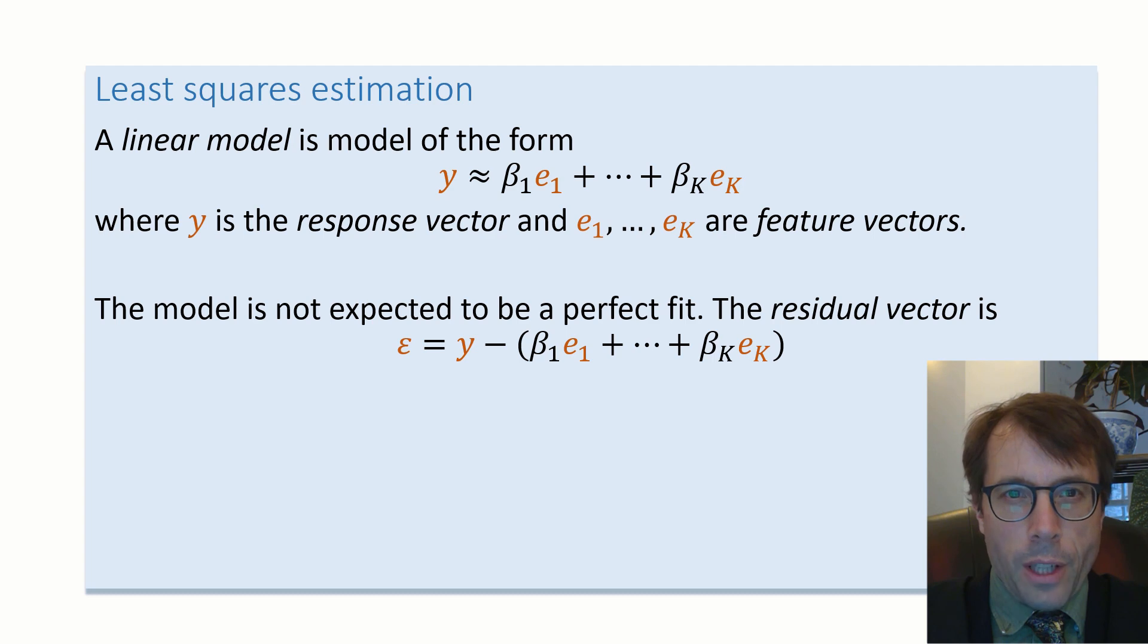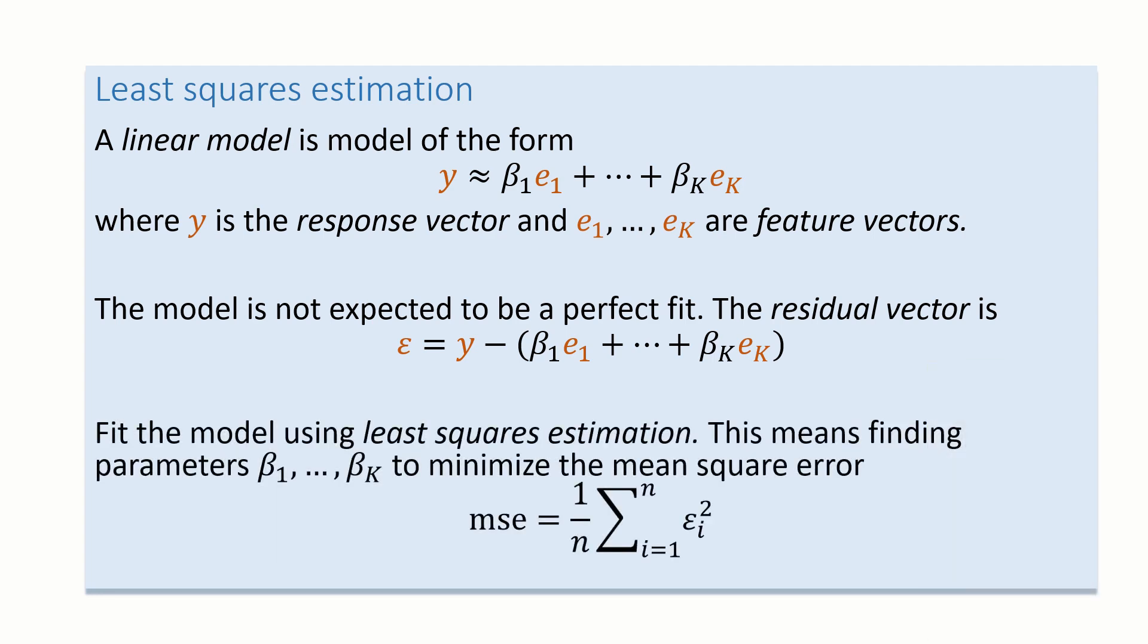Formally, this is what the model fit code does. It tunes the beta parameters so as to make epsilon as small as possible in the sense of minimizing the mean square error, i.e. the mean value of all of the epsilon squared. I'm summing over all rows i in the data set, i equals 1 up to n, where n is the total number of rows. This procedure is known as least squares estimation.